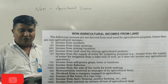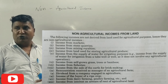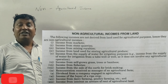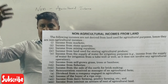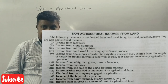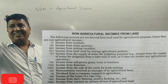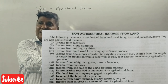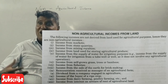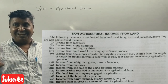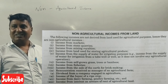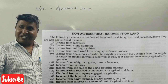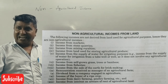Income from self-grown trees and bamboos — that is, income from spontaneous growth trees in forests — is non-agricultural. When these self-grown trees and bamboos are taken to market, that constitutes non-agricultural income. We are not cultivating agriculture here; these plants grow spontaneously into the forest, so we do not expect to build or plant them ourselves.